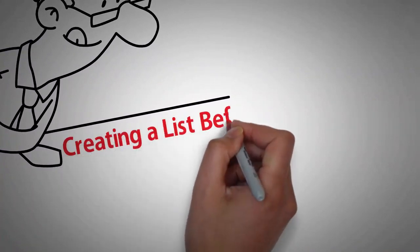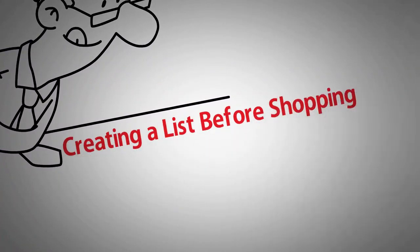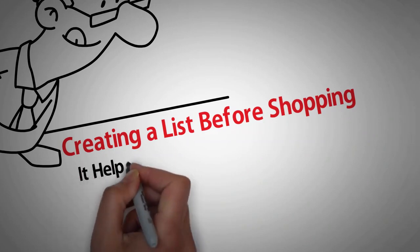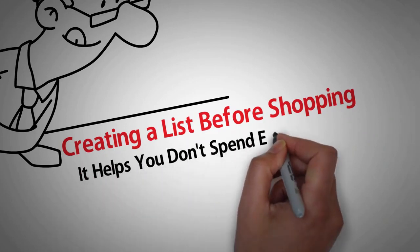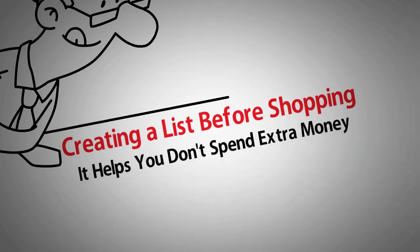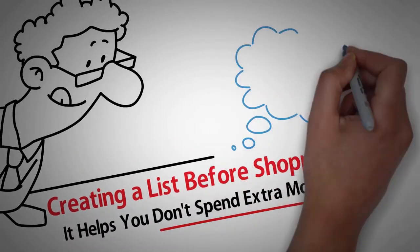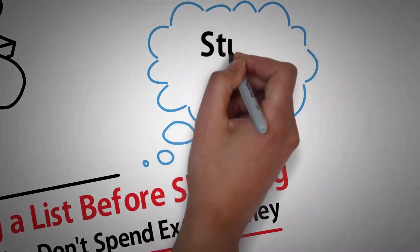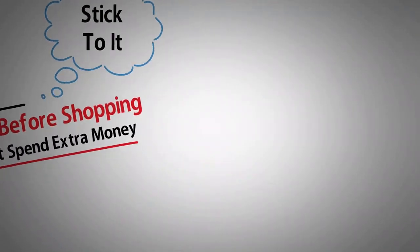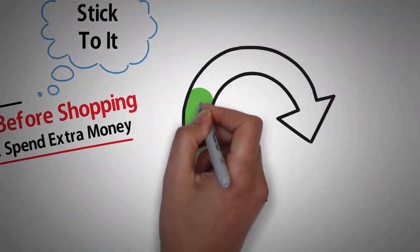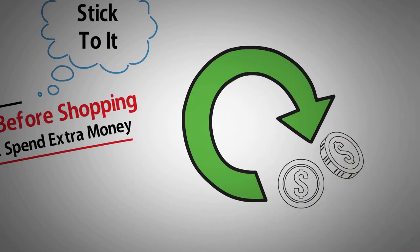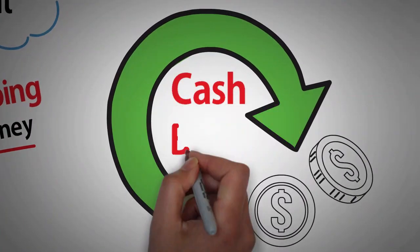Creating a list before you go to the grocery store is especially important. Not only can it help you buy items that fit with your meal plan, but it can also help you avoid buying food you might waste. Always create a list and more importantly stick to it. You can also take advantage of a cash back rewards card that gives bonus cash at grocery stores, just be sure to pay off the balance each month.